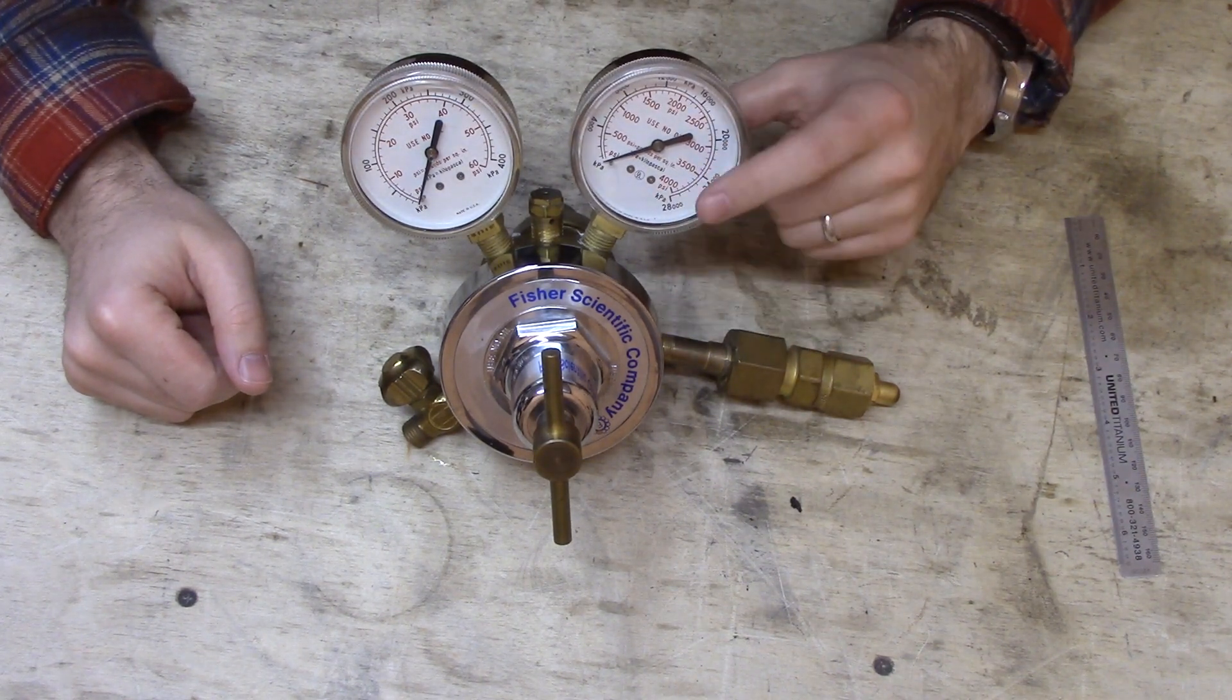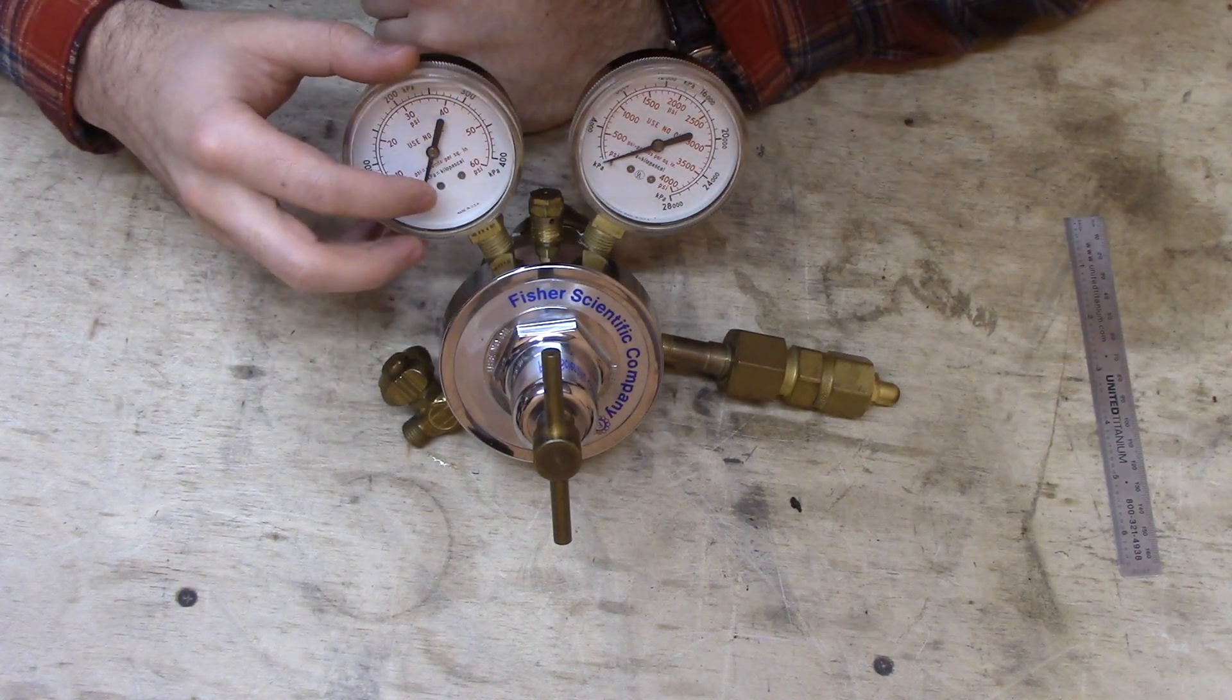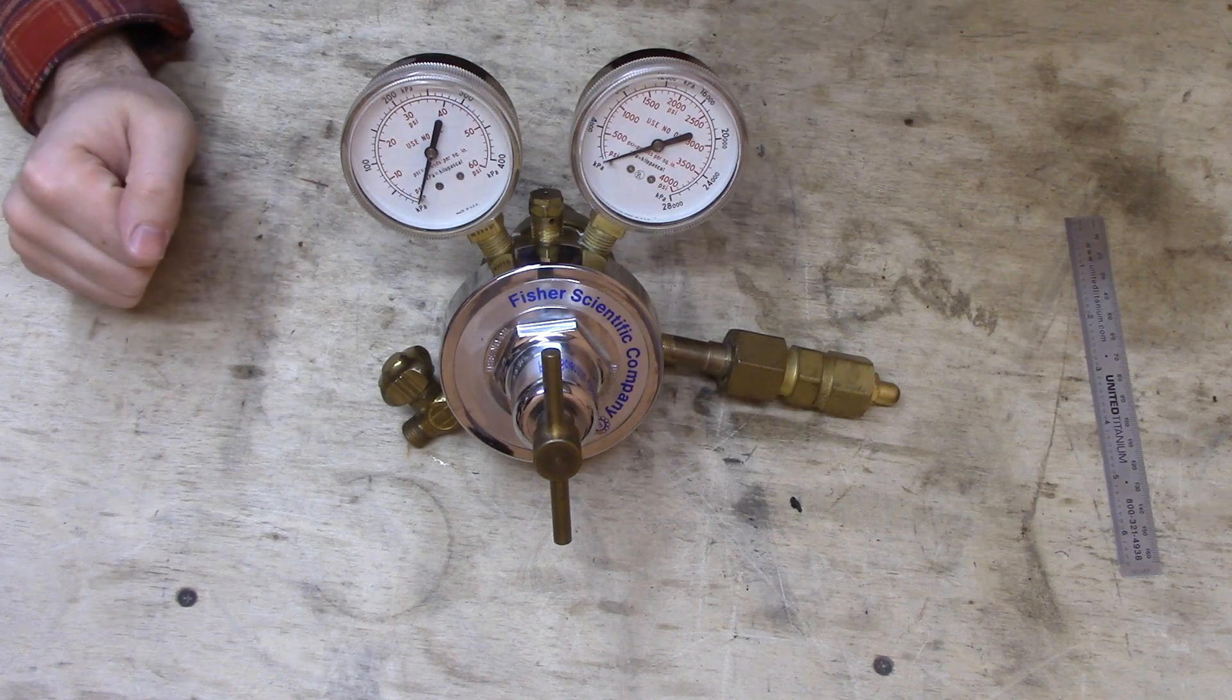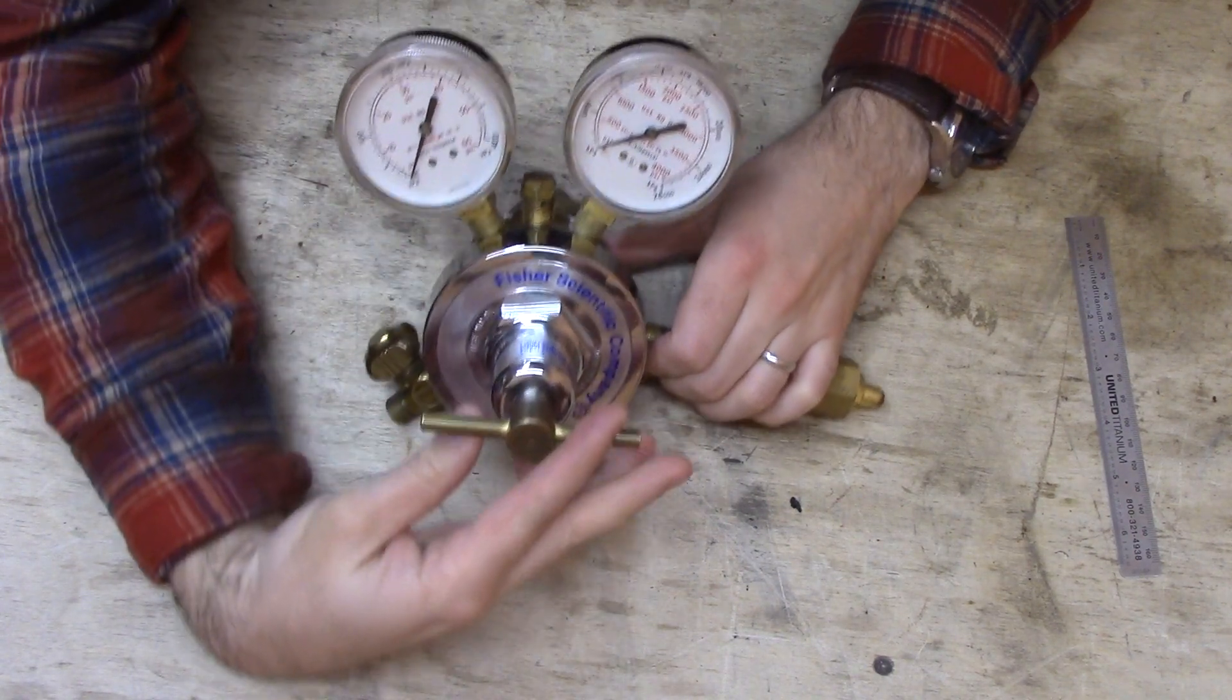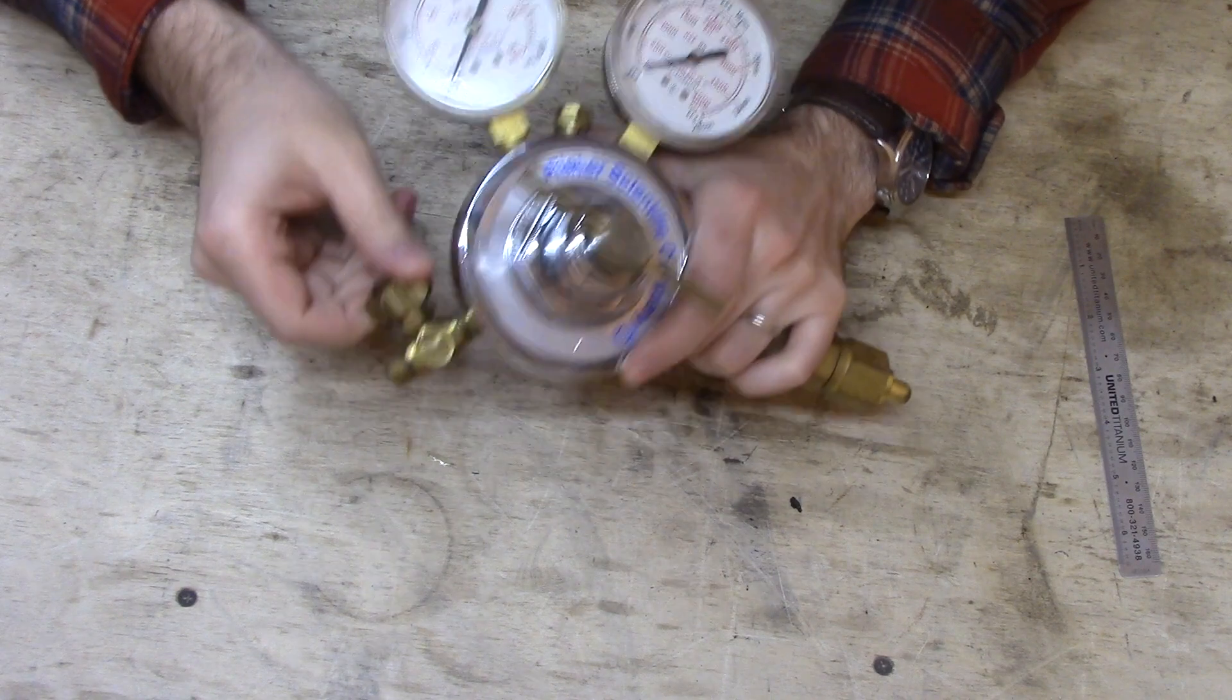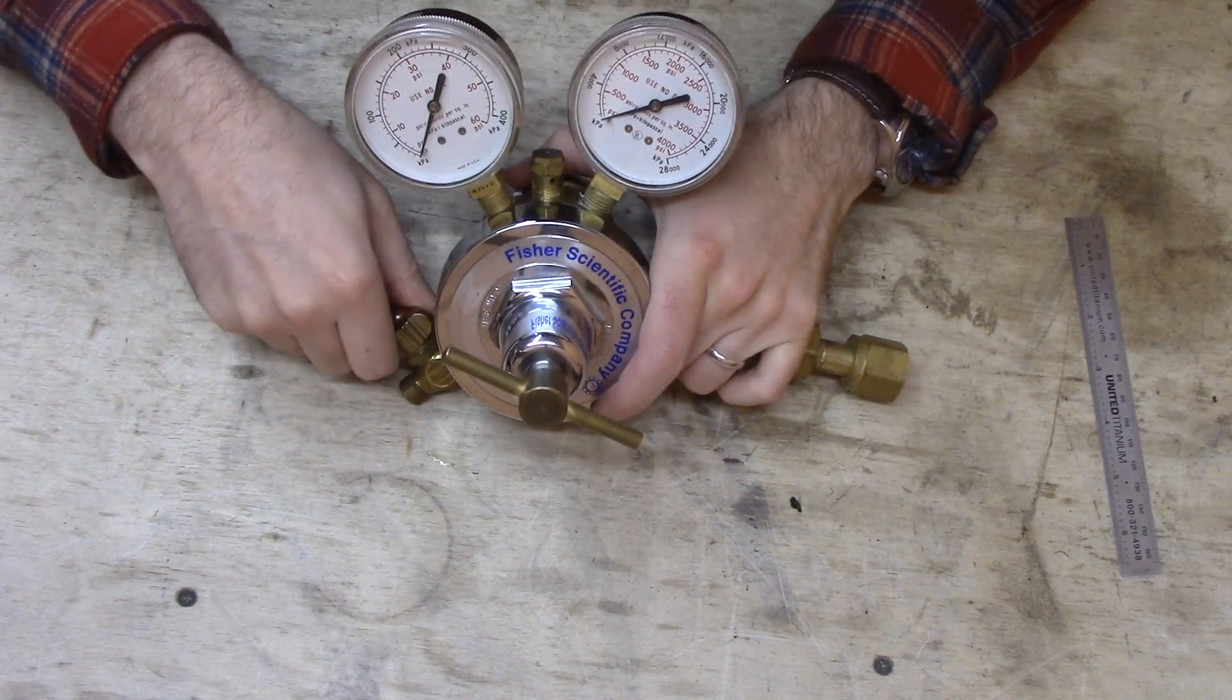I can tell by these two gauges. This one goes up to 4,000 psi—that's the inlet gas pressure. The outlet gas pressure gauge only goes up to 60 psi. The way that you adjust the outlet pressure is you turn this knob. By tightening it, you can increase that pressure.